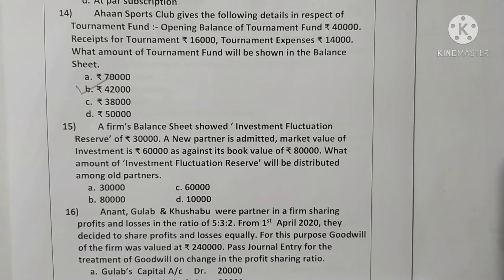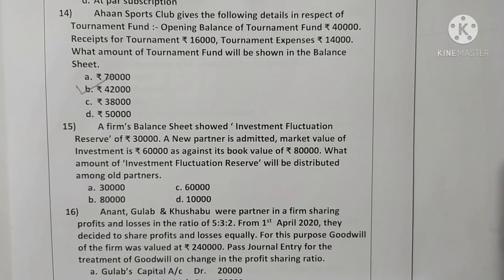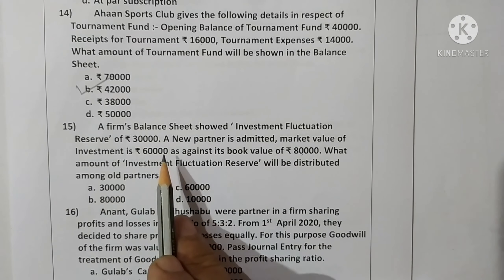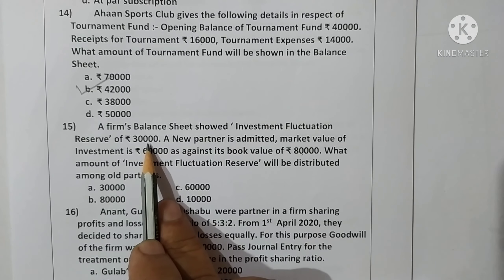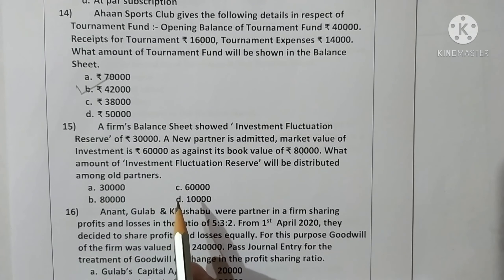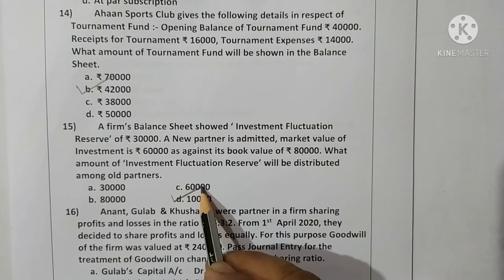Question fifteen: a firm's balance sheet showed investment fluctuation reserve of Rs. 30,000. A new partner is admitted; market value of investment is Rs. 60,000 against book value of Rs. 80,000. The difference of Rs. 20,000 is deducted from the opening balance of Rs. 30,000, giving Rs. 10,000 to be distributed among old partners. Option D is correct.